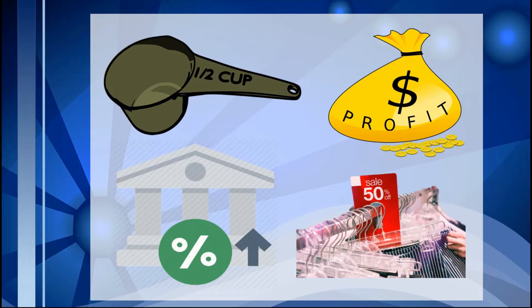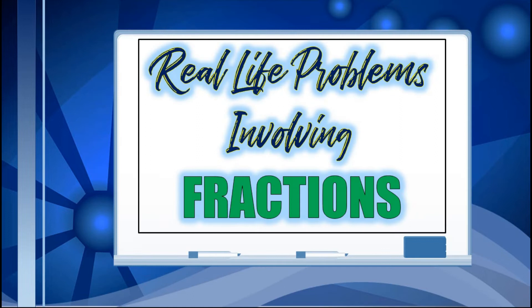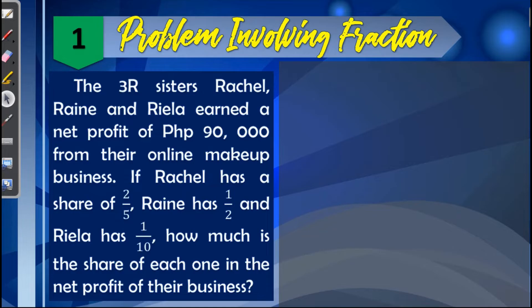Let's start solving real life business problems involving fractions. Problem number one: the three 'Our' sisters — Racial, Rain, and Riela — earned a net profit of 90,000 pesos from their online makeup business. Racial has a share of two-fifths, Rain has one-half, and Riela has one-tenth. How much is the share of each one in the net profit of their business?